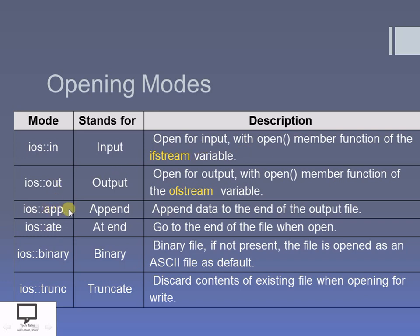The next mode is the `app` mode — append mode. In append mode, you can preserve the data available in your existing file, and the content which you currently want to write will get appended at the end of the file. So the drawback of `out` mode was that if you want to open an already existing file to add some data, `out` mode is not suitable. For that, `app` mode is suitable, where you can preserve the previous data and append the extra content at the end of the file.